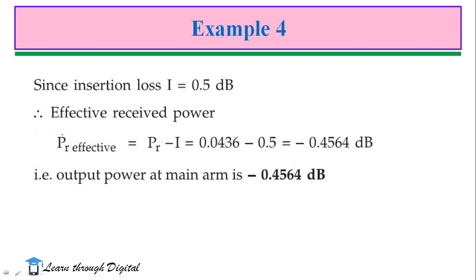The insertion loss is 0.5dB. So, the effective received power is Pr minus I. Therefore, the output power at main arm is minus 0.4564dB.